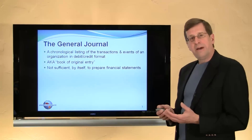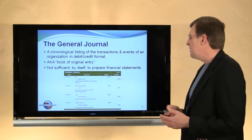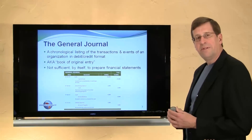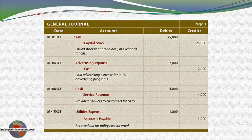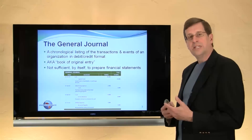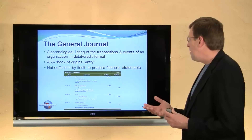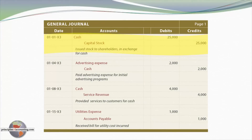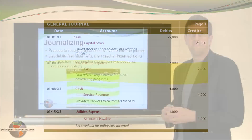The general journal is not sufficient by itself to prepare financial statements. It is simply a listing of all of the transactions and events as they occur described in their debit credit effect. For example, on January 1st we issued stock to shareholders in exchange for cash, and we're showing that accounts are affected — cash and capital stock — with debits and credits. The next transaction, we paid advertising expense for an initial advertising program, and so it would go.